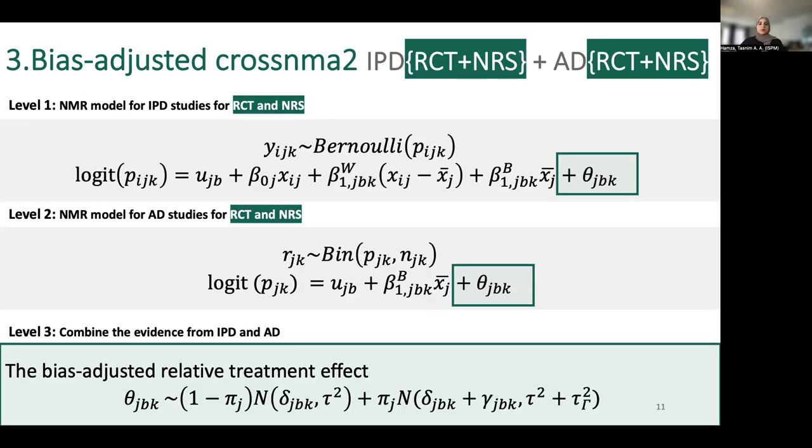There is another way to reflect study bias by directly modeling the bias-adjusted relative treatment effects theta, which is estimated by a weighted average of unadjusted effect delta and the bias-adjusted effect delta plus gamma. In bias-adjustment model 1, theta is either the unadjusted effect for low risk of bias studies or a bias-adjusted effect for high bias studies and not both. But here, we allow theta to be weighted average of both parts. For low risk of bias studies, we give greater weight to unadjusted and a little weight to bias-adjusted part and vice versa for studies at high risk of bias.